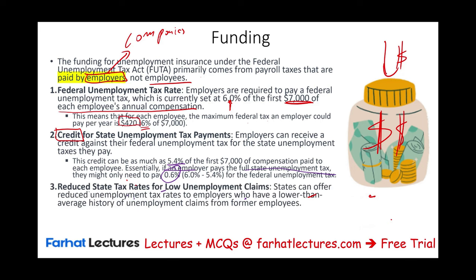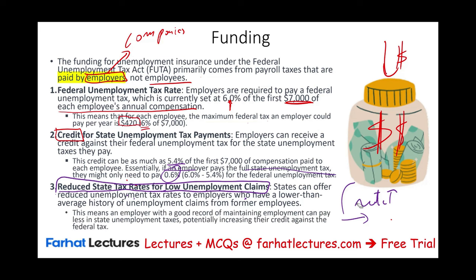There is a reduced state tax rate for employers with low unemployment claims. As mentioned, how much you pay in your state depends on your record. If you're constantly laying off employees, your rate will go up. But if over the years you keep funding the program and you're not laying off people, the state will lower your rate. There is a rating system — every year or two, they look at your record. An employer with a good employment record can pay less in state unemployment tax, potentially increasing their credit against the federal tax.